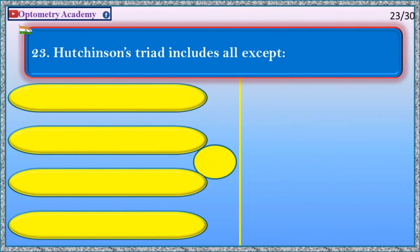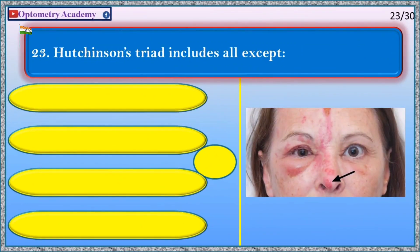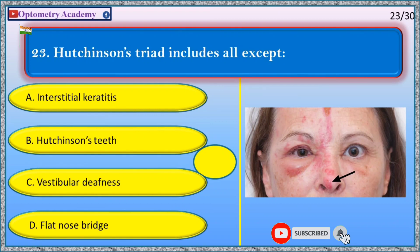Hutchinson's triad includes all except: A. Interstitial keratitis, B. Hutchinson's teeth, C. Vestibular deafness, D. Flat nose bridge.